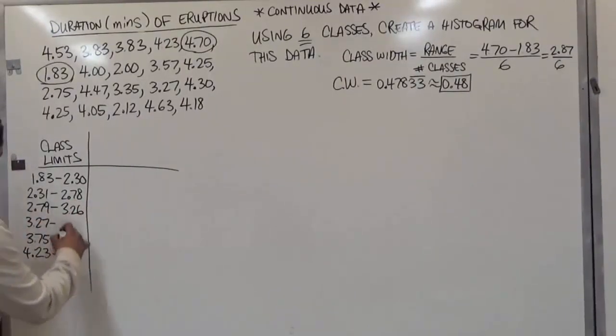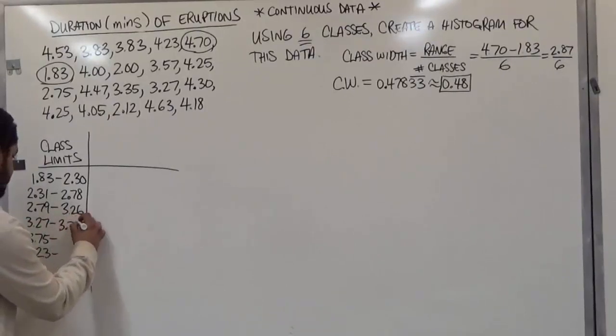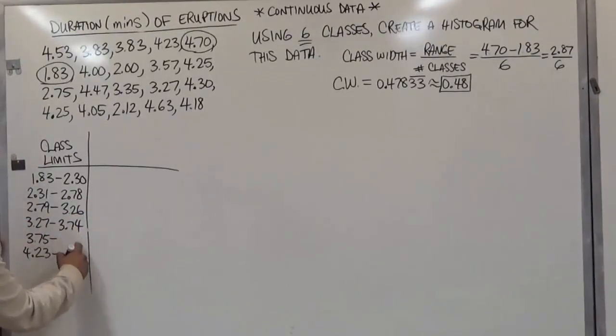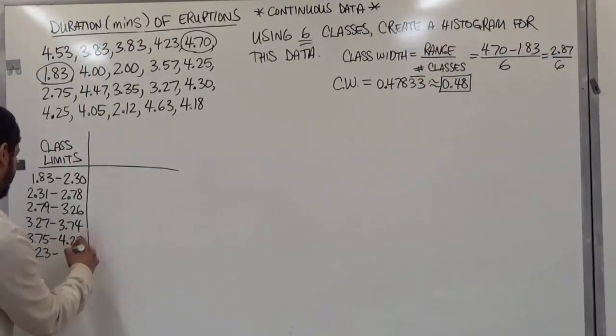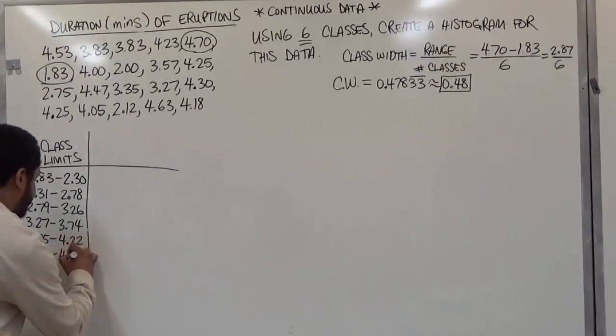This will give us 3.26. Adding 0.48 to this gives us 3.74. The following term, when we add 0.48 to this, it's going to give us 4.22. And for the last class here, when we add 0.48, that's going to be an even number. It's going to give us exactly 4.70.